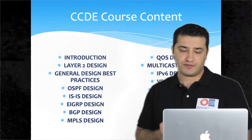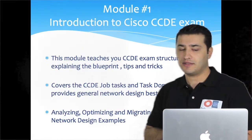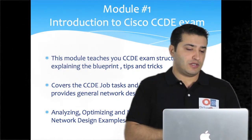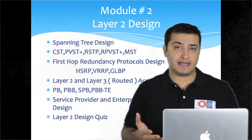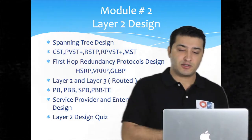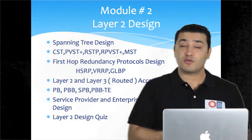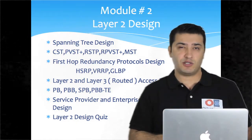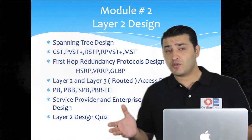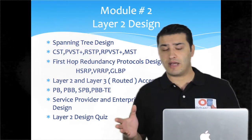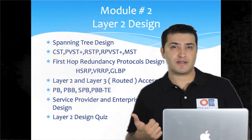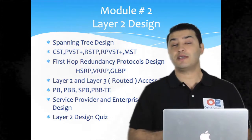We have 16 modules, and Module 1 starts with an introduction to the Cisco CCDE exam. In Module 2, I will cover Layer 2 design, including spanning tree design, Layer 2 and Layer 3 access design, first-hop redundancy protocol design such as HSRP, VRRP, and GLBP, provider bridging, provider backbone bridging, shortest path bridging, and service provider and enterprise access design. After the videos, we will take design quizzes.